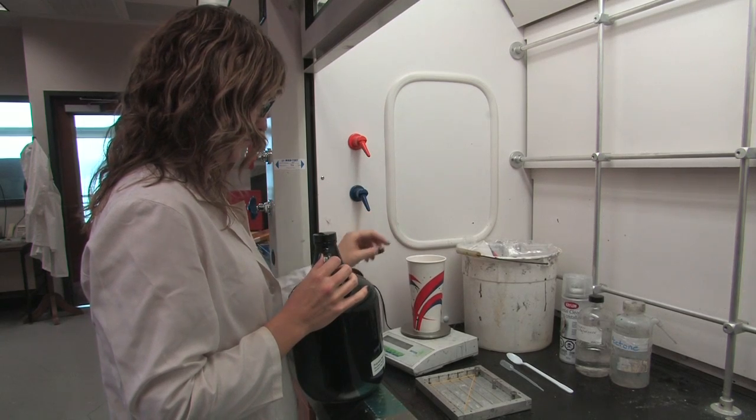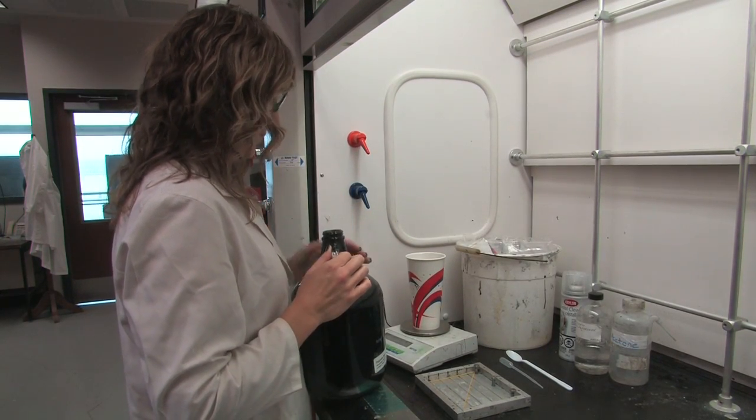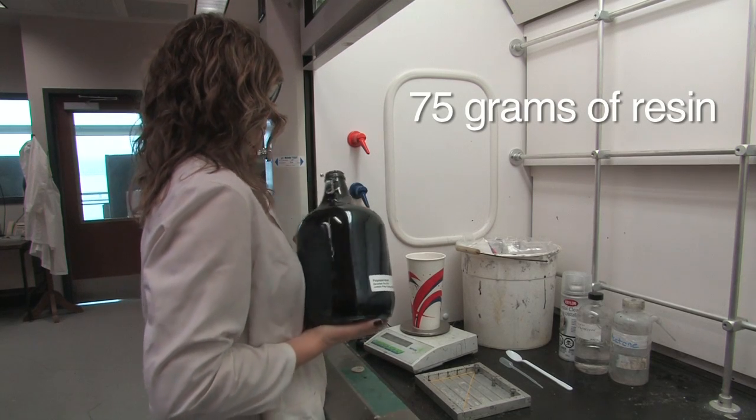Place a plastic cup on the scale and tare the scale. In this exercise, we are making one tray, so we use 75 grams of epoxy.